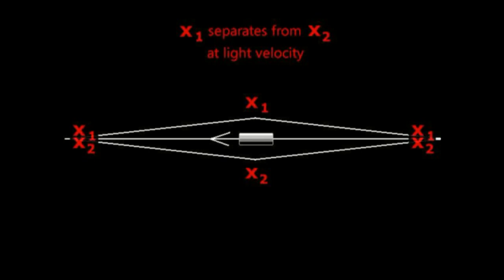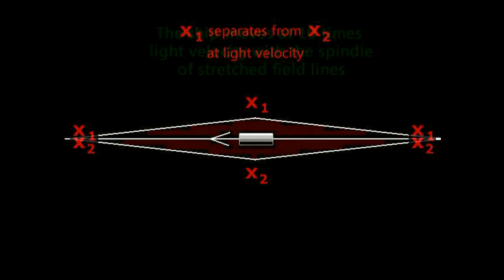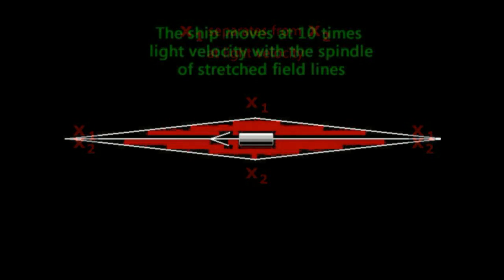The lead point of the spindle parts the normal space before it at light velocity, which is not forbidden, while the spindle itself can go faster than light due to the simple geometry involved.